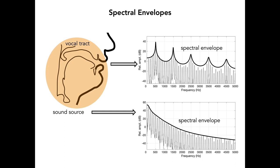These regions of the spectrum with enhanced energy are called formants, or formant frequencies, and result from the acoustic effect of the vocal tract on the source spectrum.